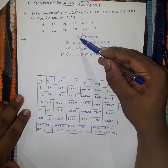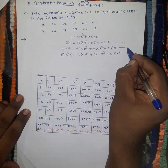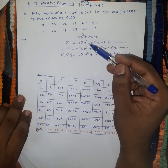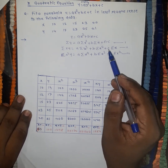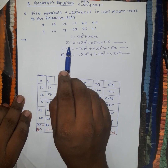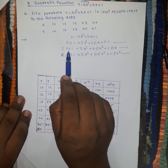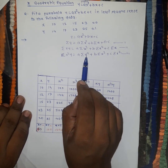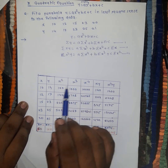In order to calculate the values of a, b, and c, there are three equations and three unknowns. We need to prepare a table that gives us the values of summation y, summation x squared, summation x, summation xy, summation x cubed, summation x squared y, and summation x to the power 4.